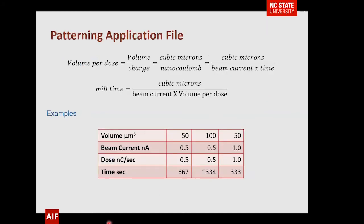Here's a typical volume per dose calculation for a patterning application file. Basically, you would do a rectangular removal using whatever beam you have, run it for a while, then use AFM or some other technique to determine exactly what volume you removed, and come up with volume per dose. As an example: removing a 50 micrometer cube volume with a 0.5 nanoamp beam is going to take about 667 seconds. If you double that volume, it's going to basically double that time.